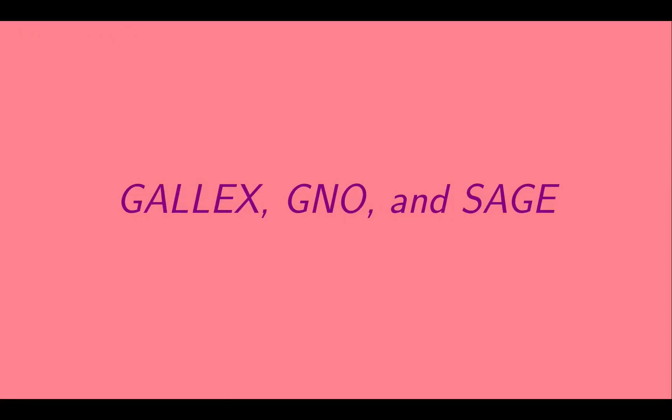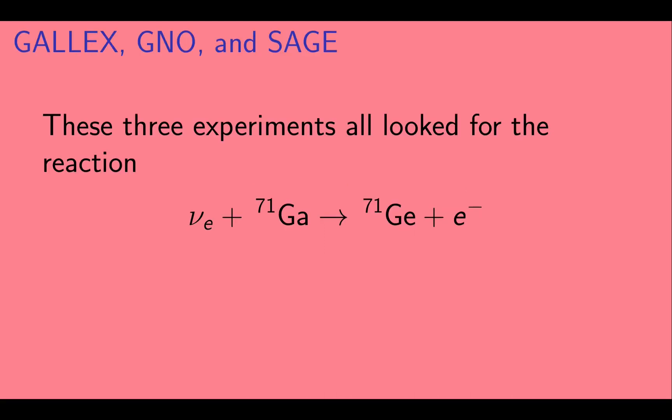Now let's talk about GALLEX, GNO, and SAGE. These experiments all looked for the reaction where an electron neutrino impinges on a gallium-71 nucleus, transforming it into a germanium-71 nucleus and emitting an electron.